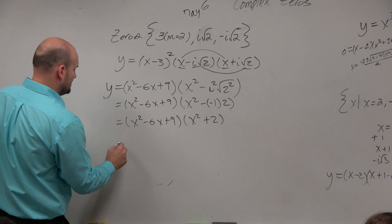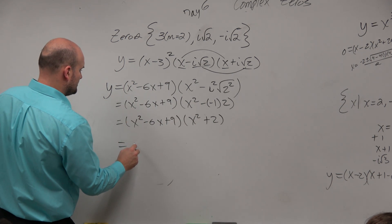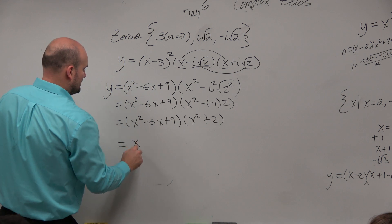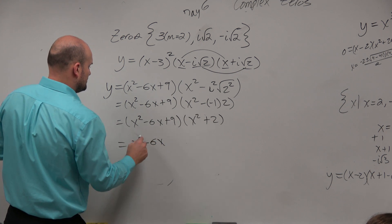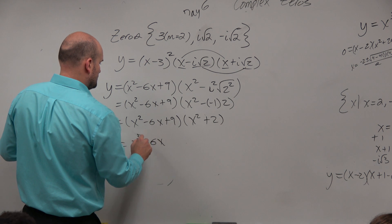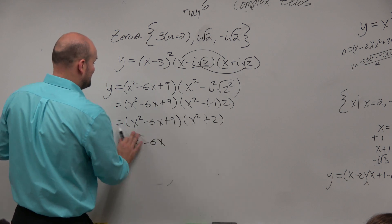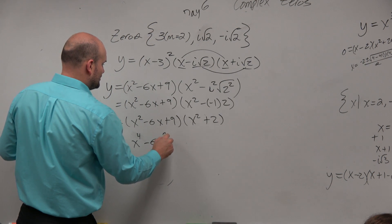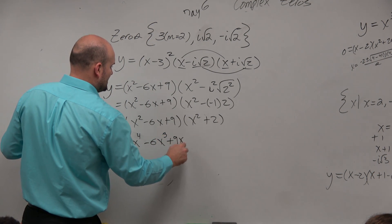Now we just need to multiply this. So I'm just going to use FOIL. So I'm going to multiply the x squared times everything. So x squared minus 6. Oops, sorry. That's x cubed. No, I'm sorry. That's x to the fourth, right? x squared times x squared is x to the fourth. That's x to the cubed plus 9x squared.